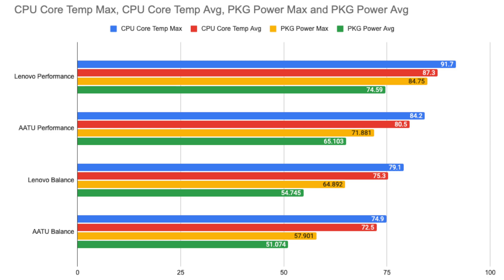With the values we have, it looks like AATU will be preferred, having low average temperature and decent package power draw. Let's see how this works in gaming, since this was simply targeting the CPU only.